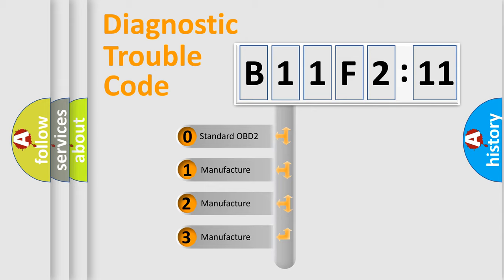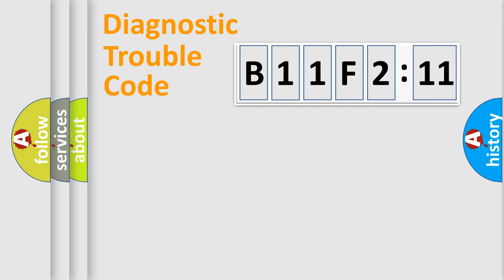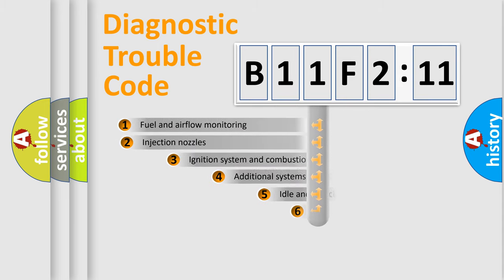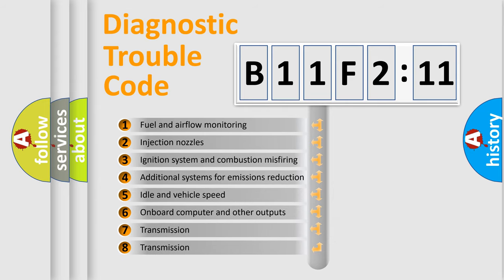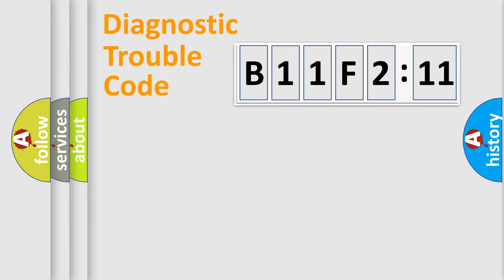If the second character is expressed as zero, it is a standardized error. In the case of numbers 1, 2, 3, it is a car-specific error. The third character specifies a subset of errors. The distribution shown is valid only for the standardized DTC code. Only the last two characters define the specific fault of the group.